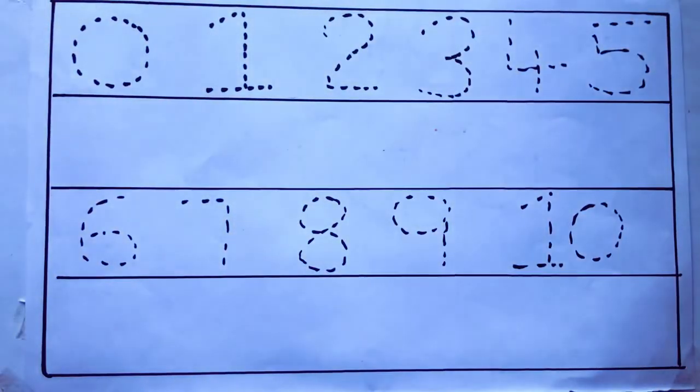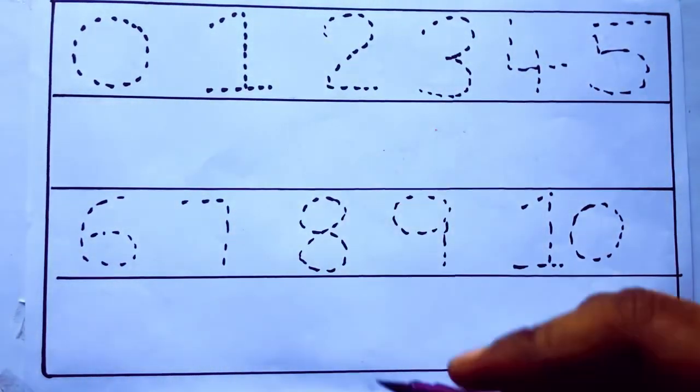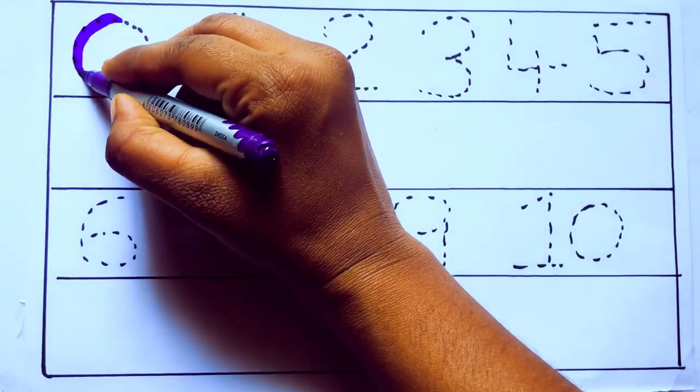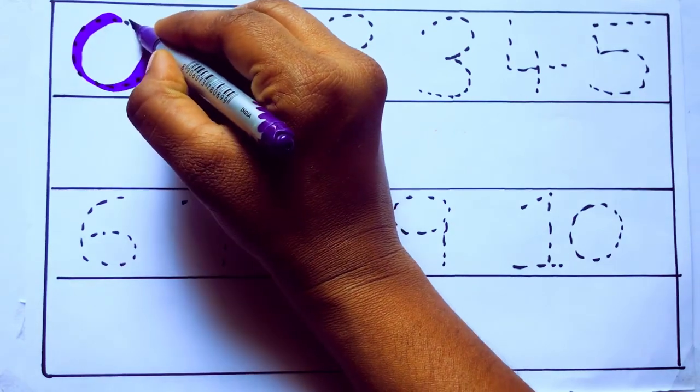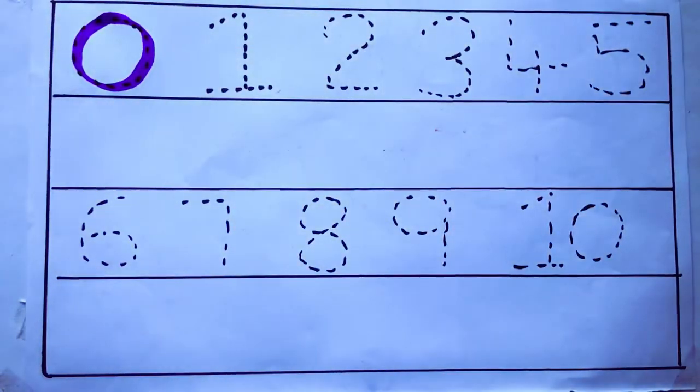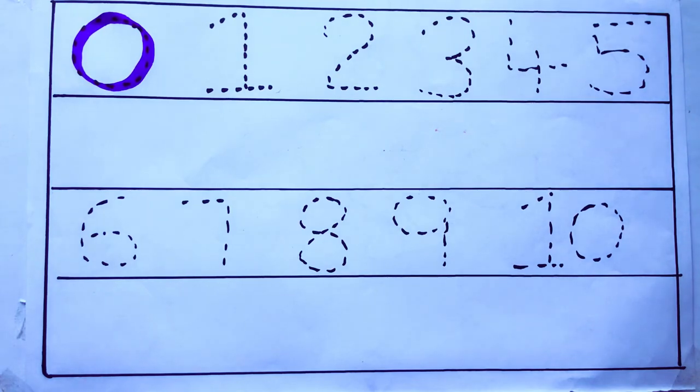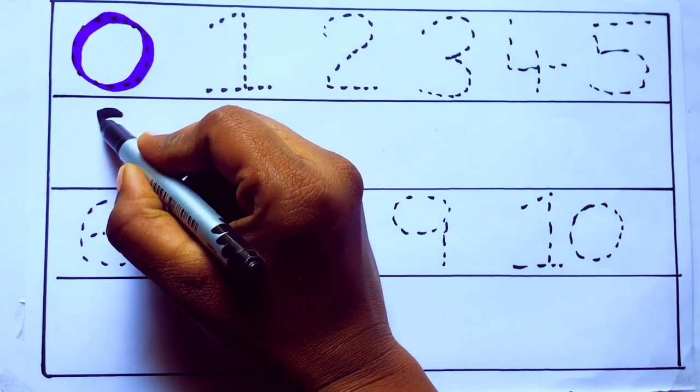Let's draw numbers. Violet color, 0. Z, E, R, O. Zero.